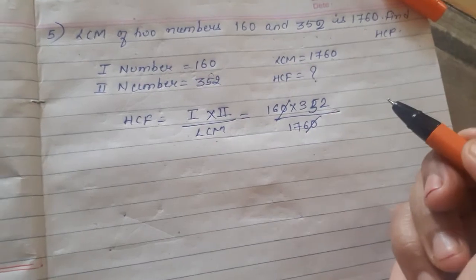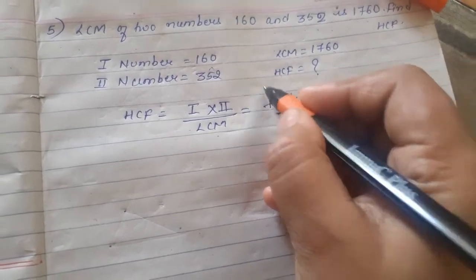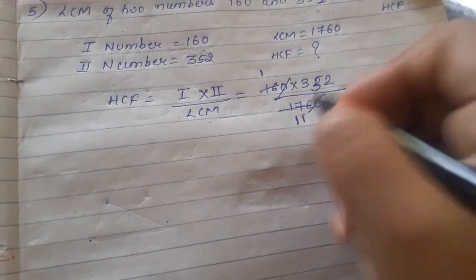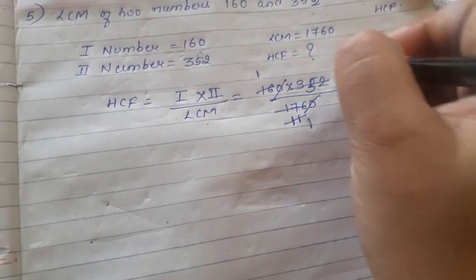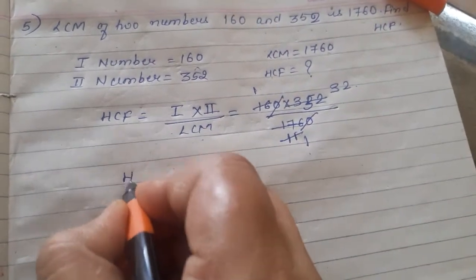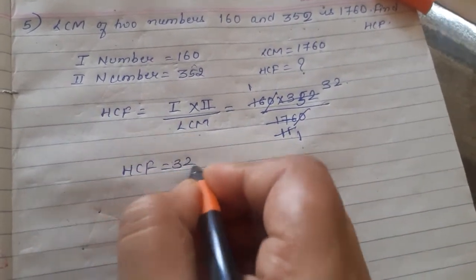Zero and zero cancel out. For simplification, you can do it in your own way. 16 ones are 16, 16 elevens are 176. Now 11 ones are 11, 11 threes are 33, 11 twos are 22. So HCF comes out to be 32.